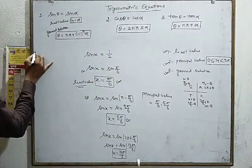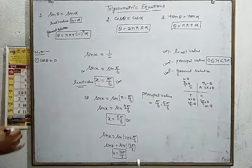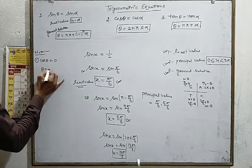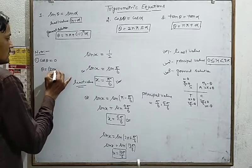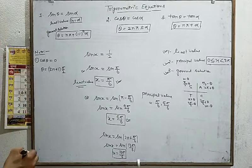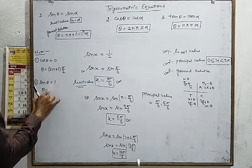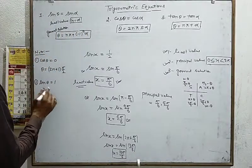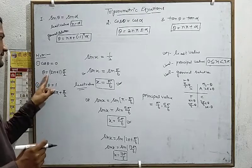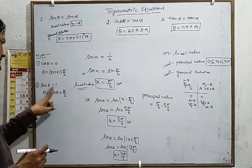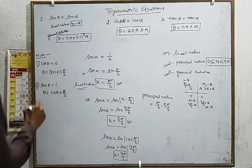After these, there are some exceptions where we do not use the formulas. These exceptions involve 90-degree cases. Exception one (note this down): if cos theta = 0, then theta = 2npi + pi/2, which equals (2n+1)pi/2. This is the case for cos theta = 0. The other exception is cos theta = 1, giving theta = 2npi.